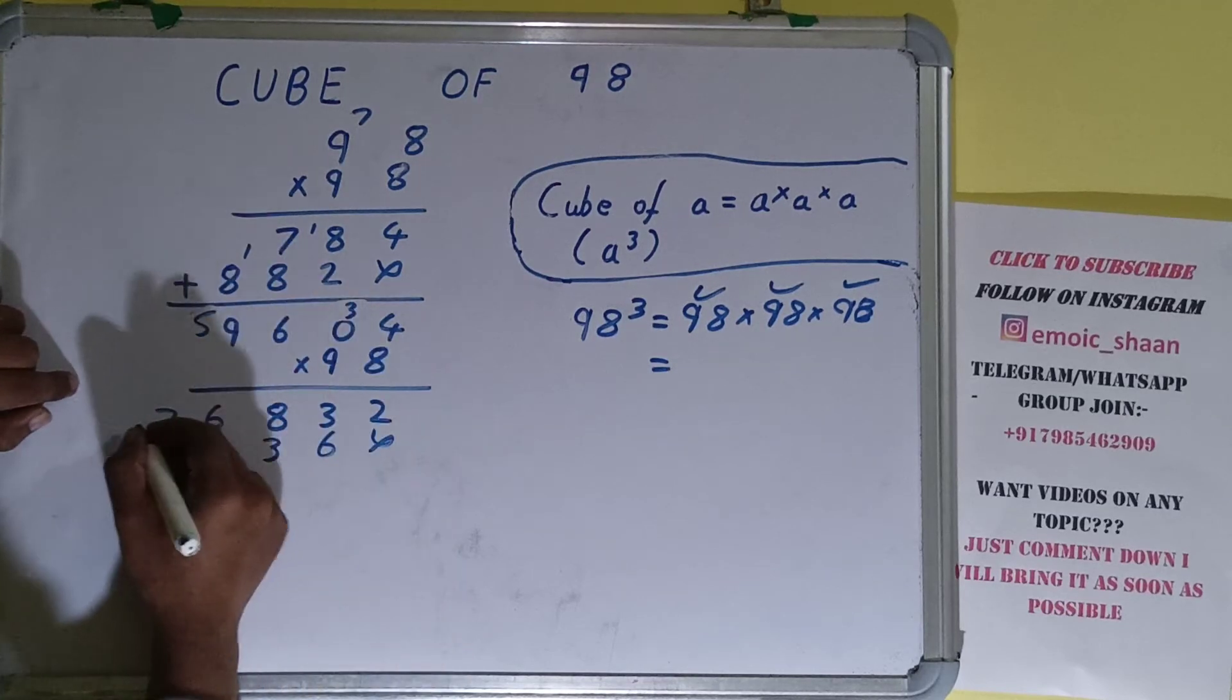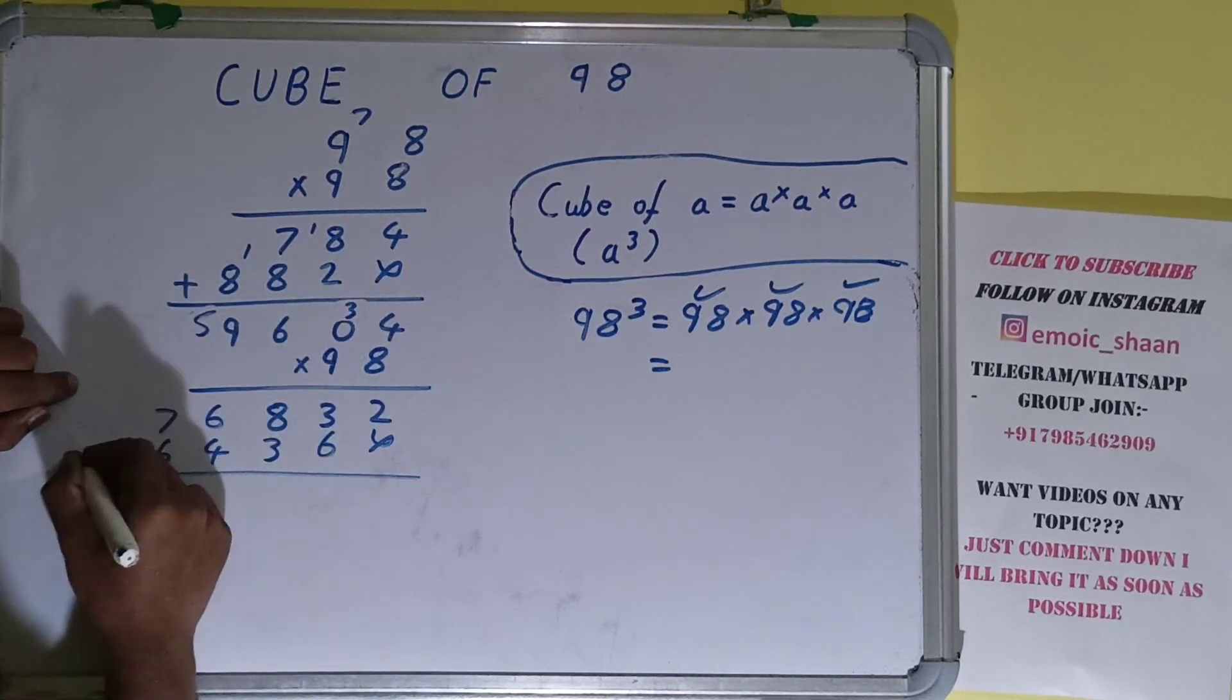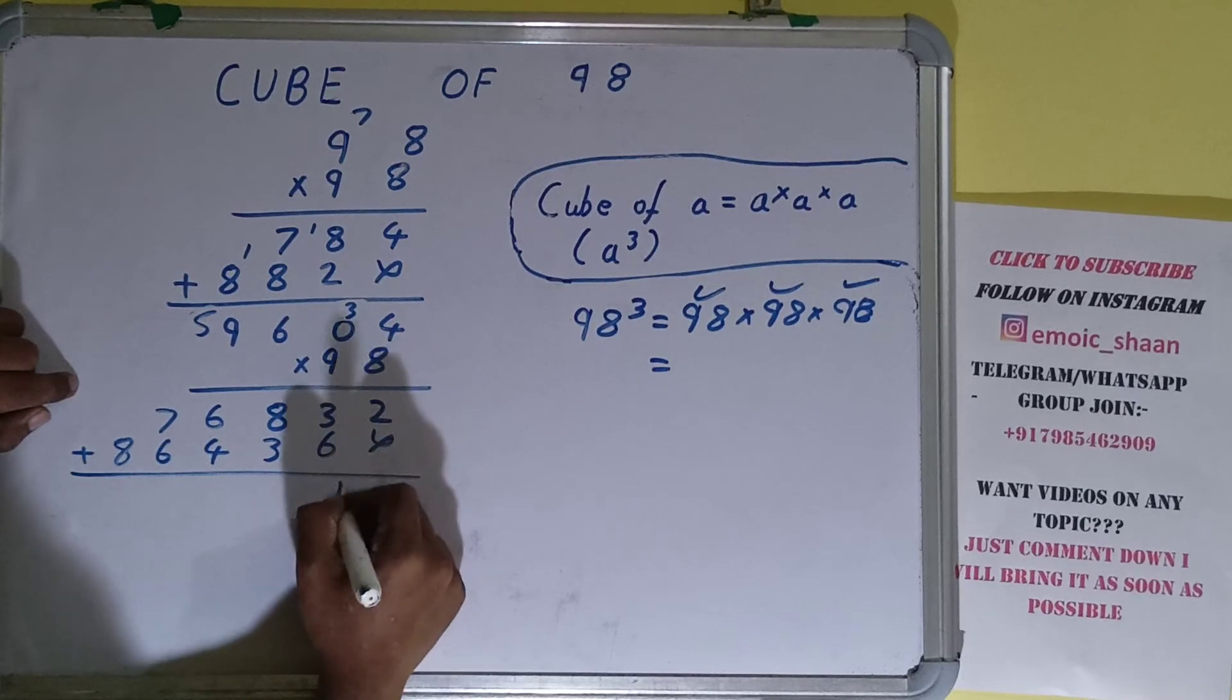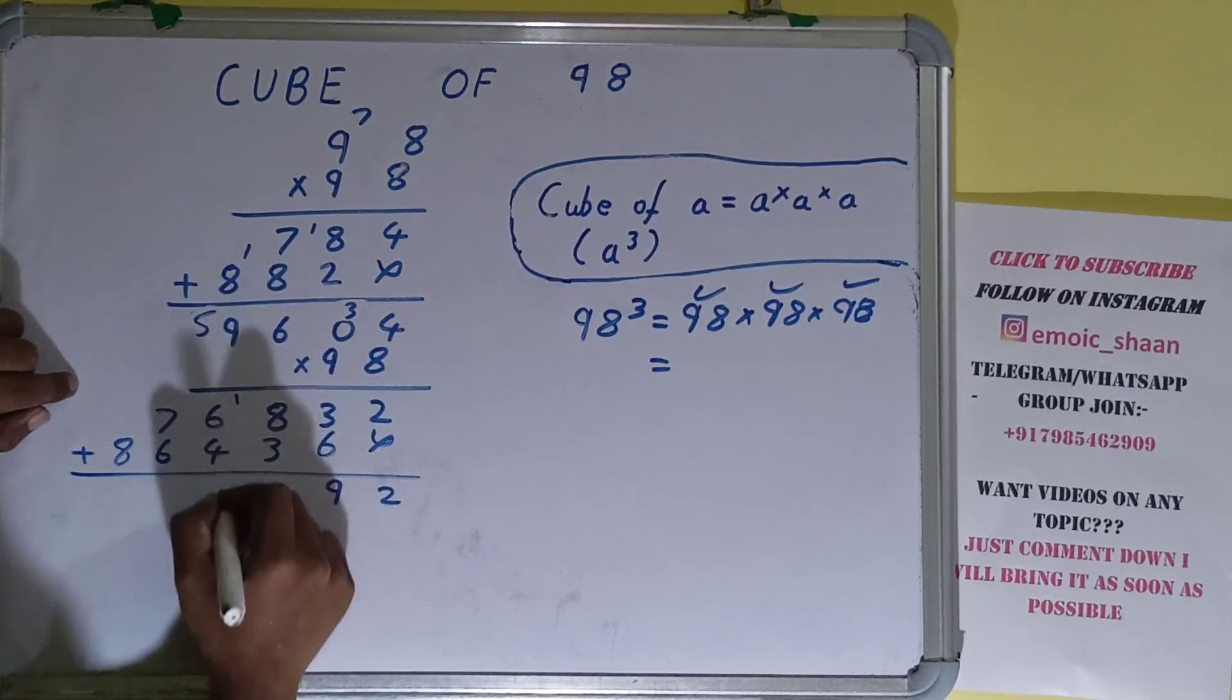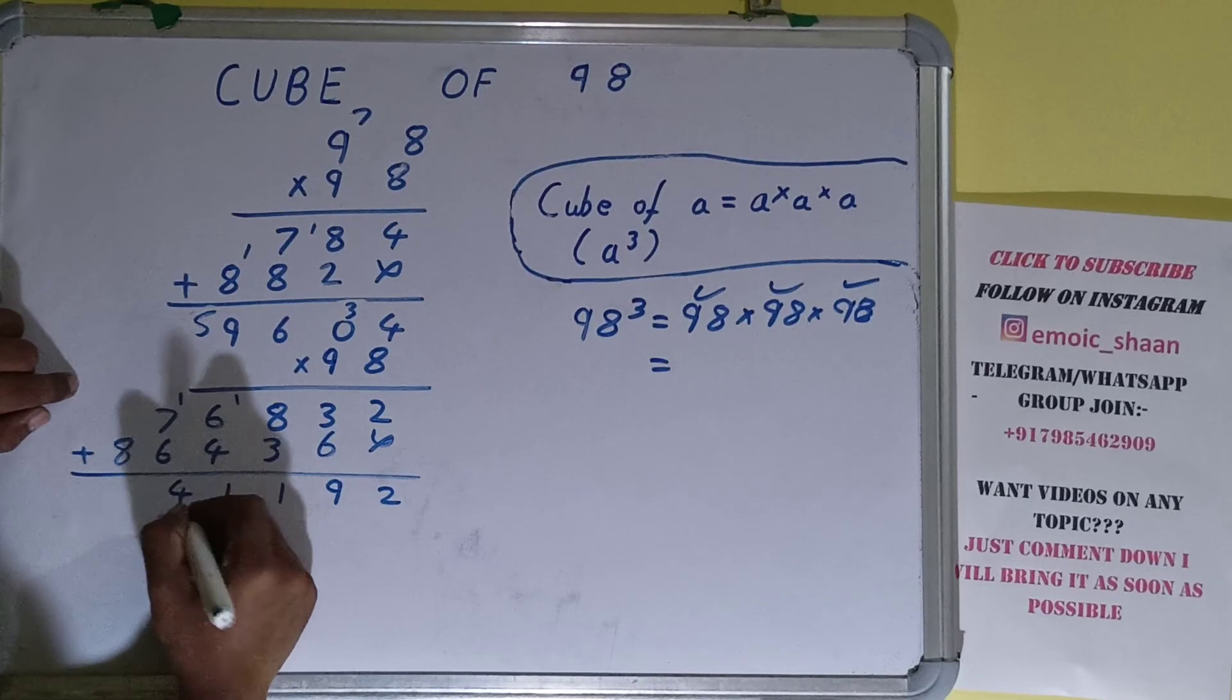9 times 9 is 81 plus 5 is 86. Just add all this: will be 2, this will be 9, this will be 1, this will be 1, this will be 4, this will be 9.